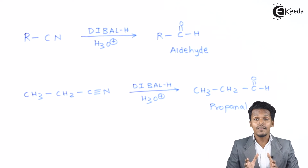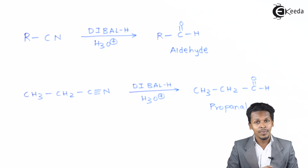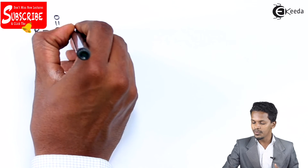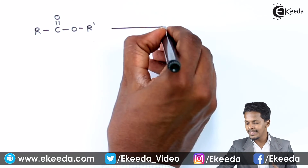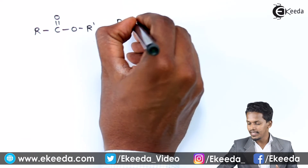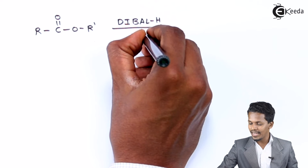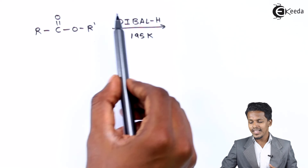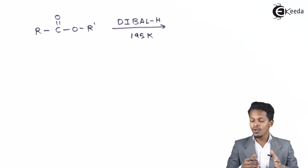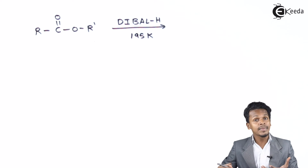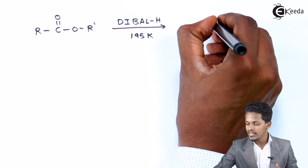Now let us discuss the second reaction where we are using DIBAL-H — converting an ester into an aldehyde. To convert an ester into an aldehyde: suppose we consider an ester R-C(=O)-OR′ and it reacts with DIBAL-H, but the temperature we must maintain is 195 Kelvin. Because we are using a reducing agent, it will convert this ester into an aldehyde: R-C(=O)-H.